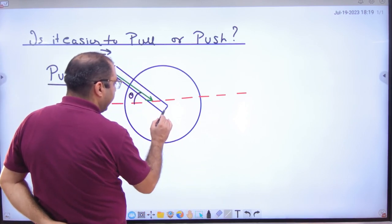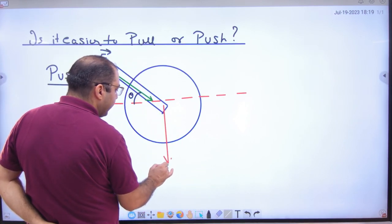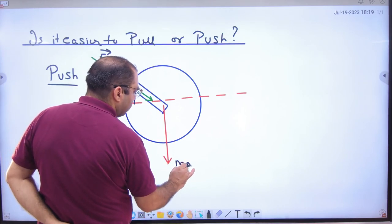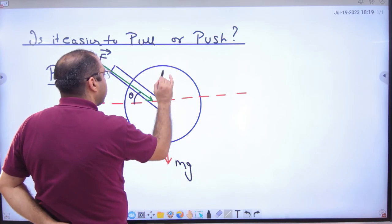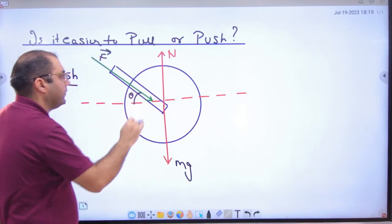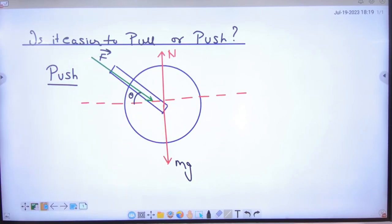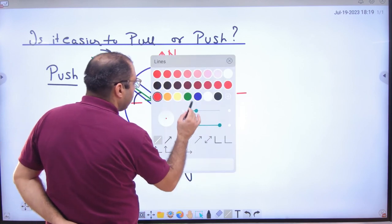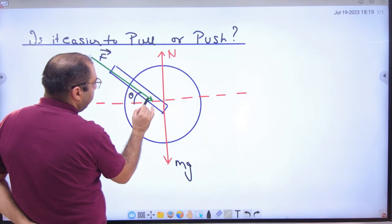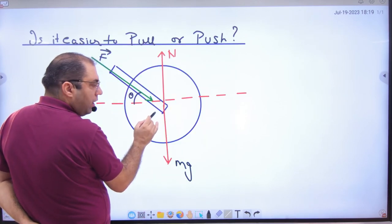What will happen? The weight of this, where will it act? Vertically downwards. And the normal reaction, where will it act? Vertically upwards. Is this clear? Now what will we draw? Components.